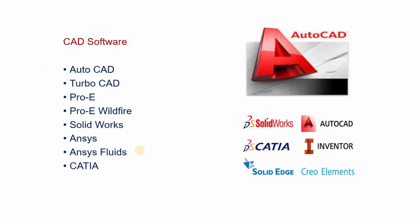Various types of graphic software are available in the market. AutoCAD and TurboCAD are used for designing 2D images, drawings, and objects. Pro-E, Pro-E Wildfire, and SolidWorks are used for designing 3D images, objects, and machine components. ANSYS, ANSYS Fluids, and CAD-YAS are used for design and analysis of various objects and components, including finite element analysis, stress analysis, strain analysis, thermal analysis, and kinematic analysis.